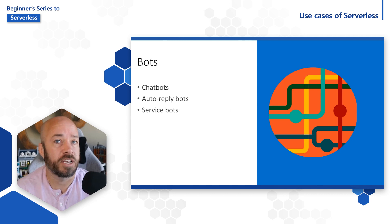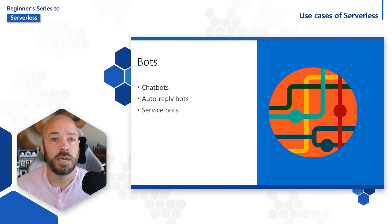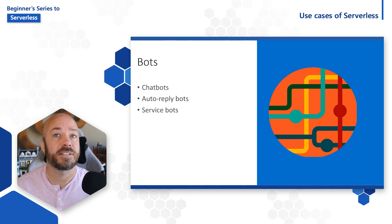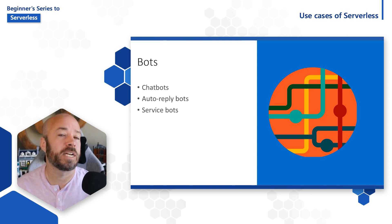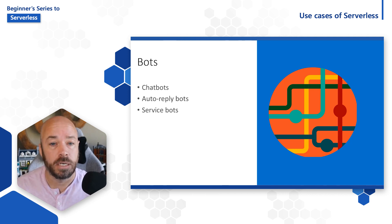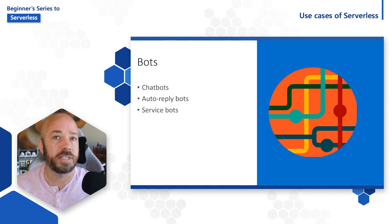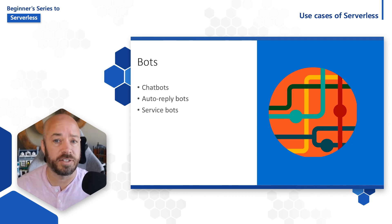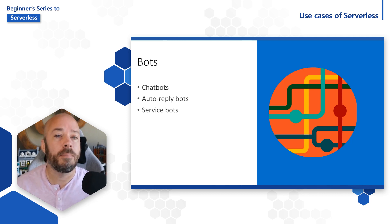Bots are also a particularly good use case for serverless because bots respond to human behavior, and human behavior is unpredictable. This can be chat bots, bots that auto-reply with a message like updating a customer on the status of an order via text or chat, or service bots that pull in data or more information when you paste a link into Slack or Microsoft Teams. Human behavior is by definition unpredictable and erratic. You don't know how many people will sign up for order updates, how many will talk to your bot for FAQs, or whether a customer will opt out. Serverless is great for these scenarios because you don't know how much these things will be used and you don't want to be charged when they're not.